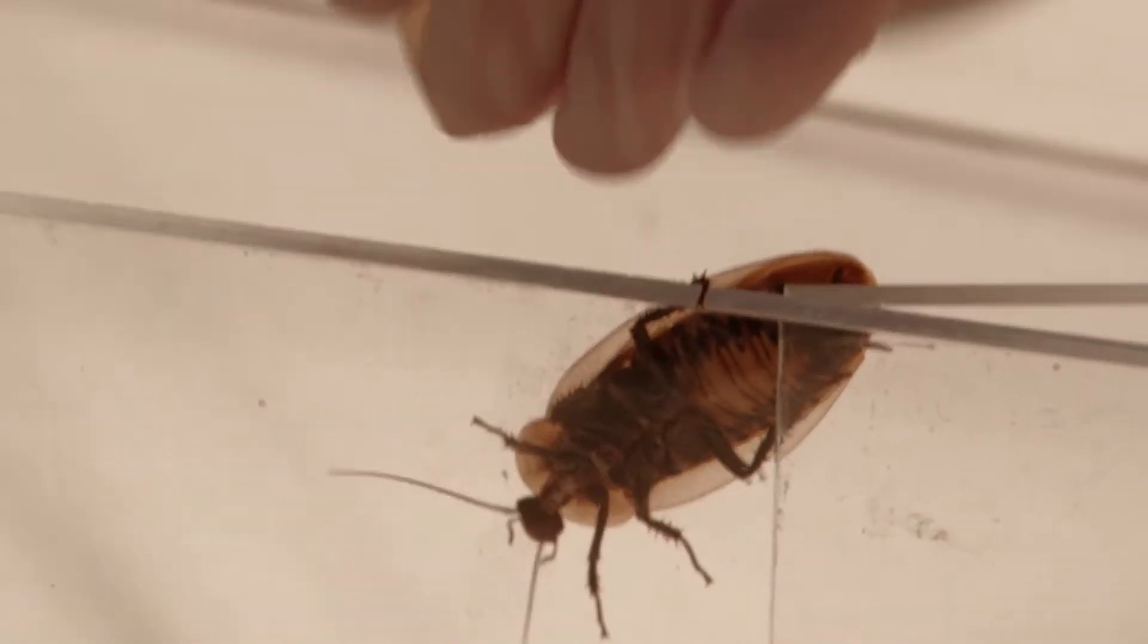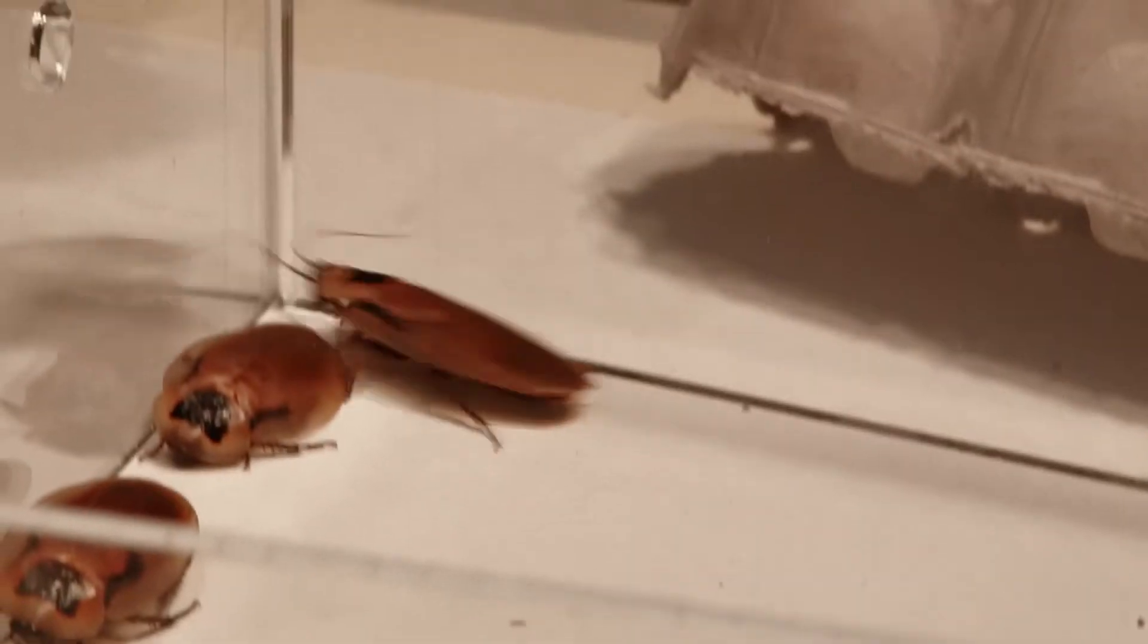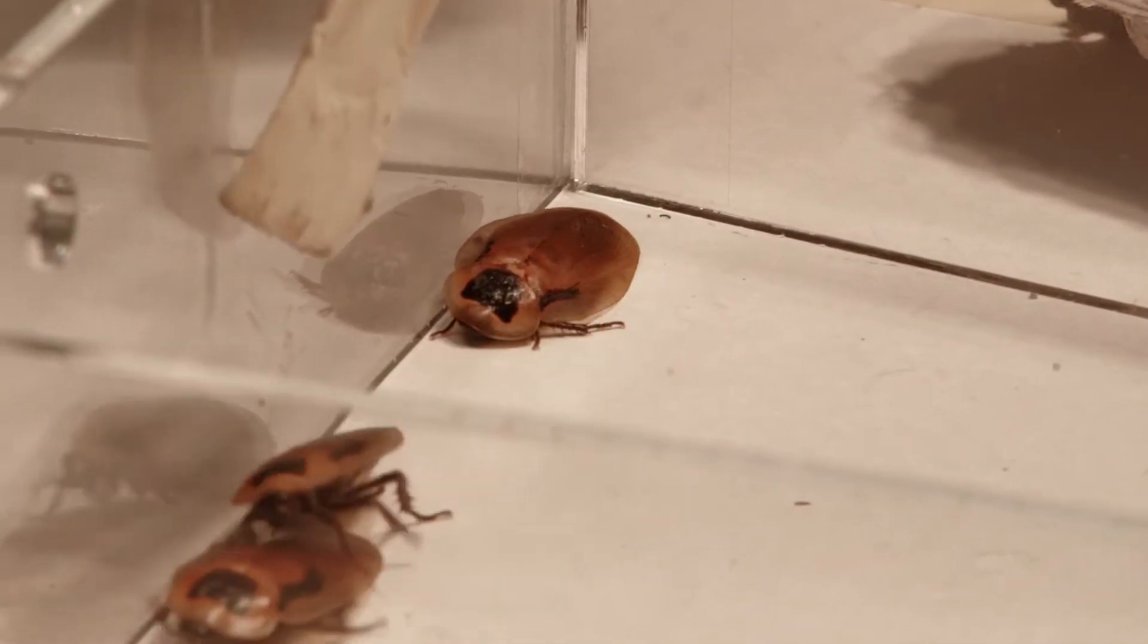It turns out a cockroach has something special that helps it maneuver over tough terrain. We discovered that the body shape of these animals are in fact well adapted to maneuver through clutter obstacles.